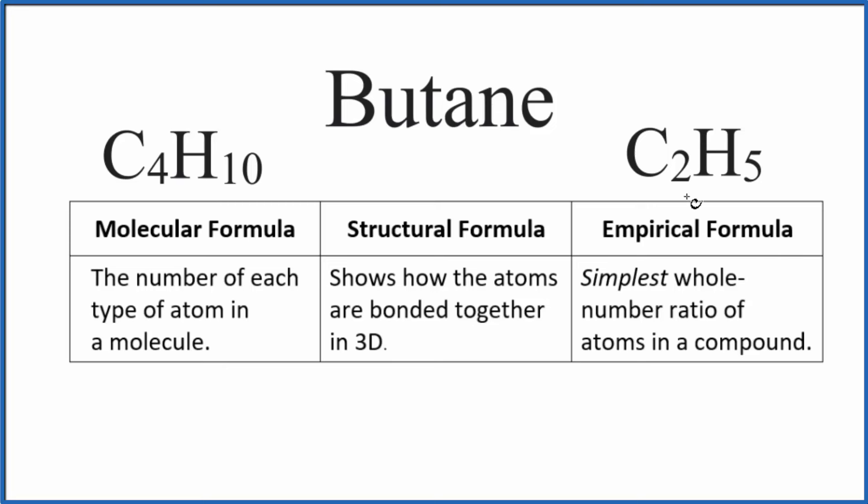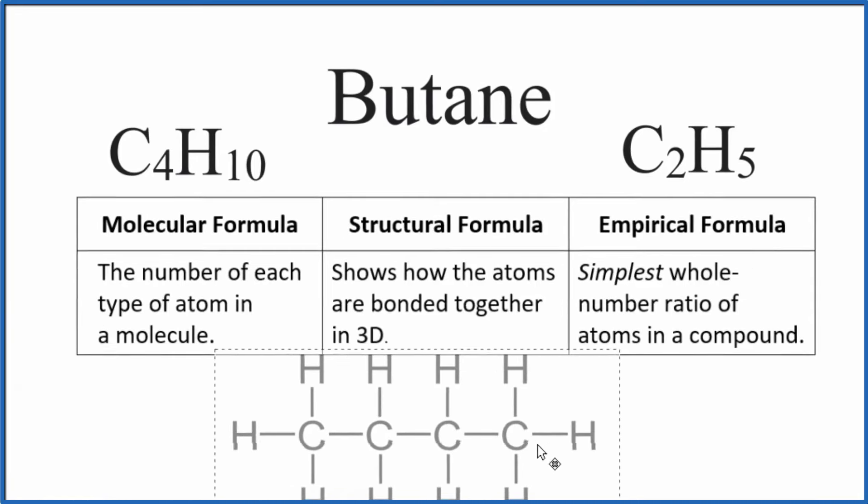Again, the empirical formula here is the simplest ratio, two to five, whereas the molecular formula is the actual number of atoms, four carbon atoms and 10 hydrogen atoms. If we wanted to draw the structural formula for butane, that would look like this.